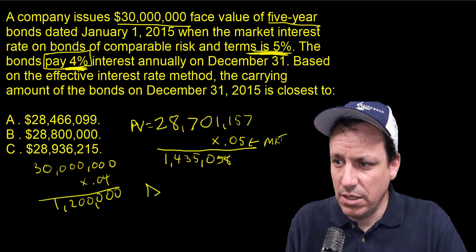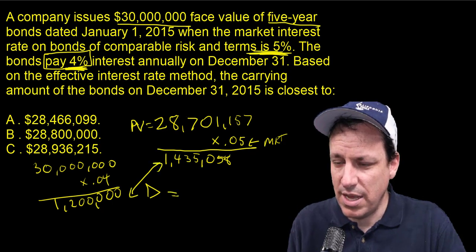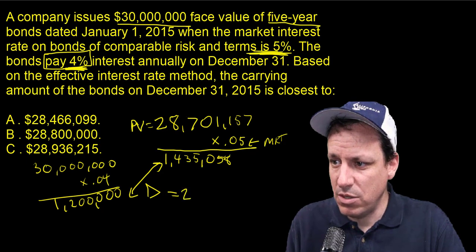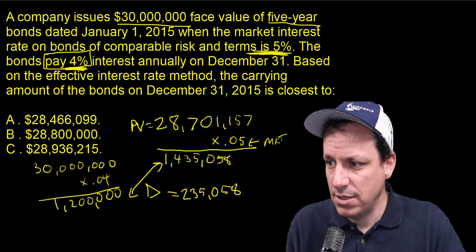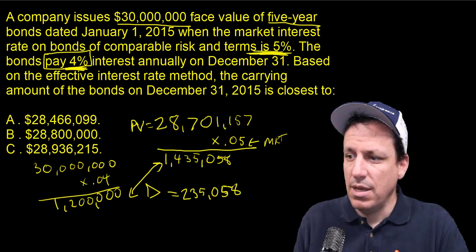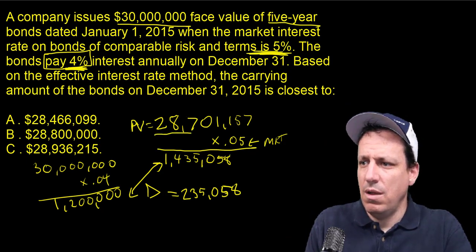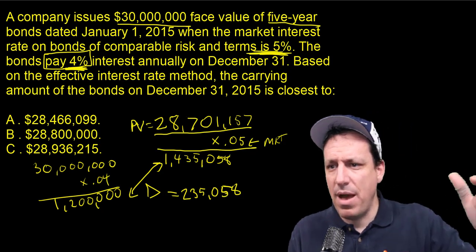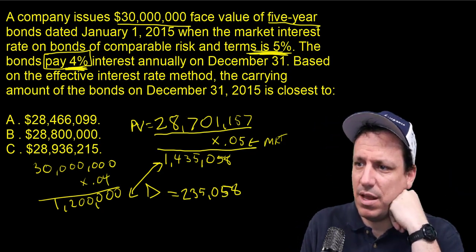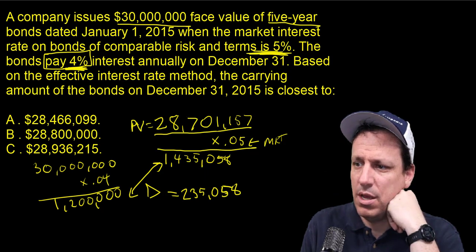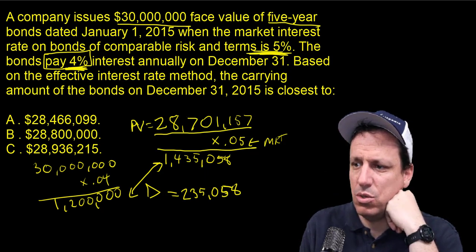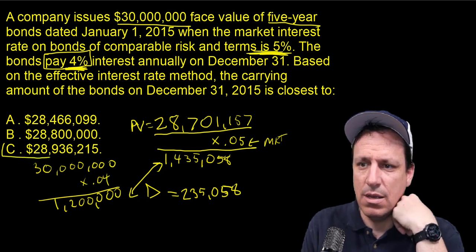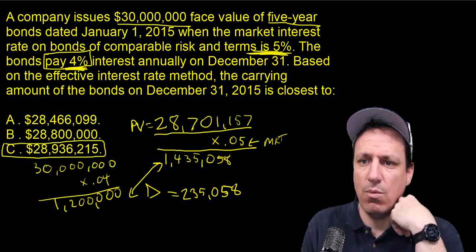We have to take the delta of these two — the net difference between the interest expense and the coupon payment. That comes out to about $235,058. This was the discount amortization on the bond, so we're going to write up the bond by that amount. If you just do this in your head: $28,701,000 plus $235,000 is going to equal approximately $28,936,000. We can ballpark it and know it's the right answer choice.